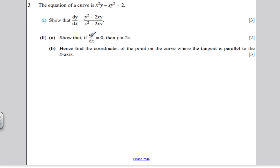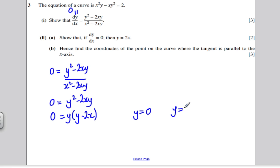Part 2a says, assume dy by dx is 0. So, 0 equals y squared minus 2xy, all divided by x squared minus 2xy. If I multiplied both sides by x squared minus 2xy, I would get 0 equals y squared minus 2xy. And factorising out the y here, I would get y times y minus 2x equals 0. Now, that tells me either y is 0 or y is 2x.